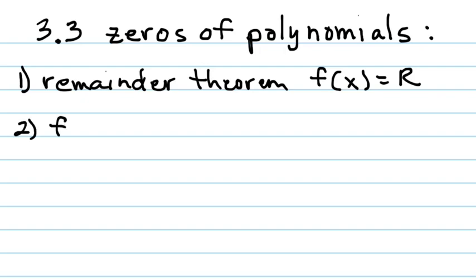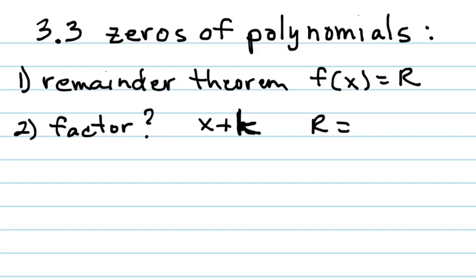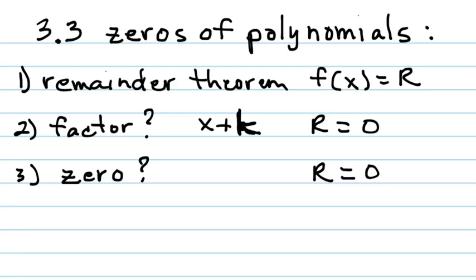Then, we were asked to see if a specific binomial is a factor. So x plus k is a factor only if the remainder equals zero. And the third one: they were asking whether a certain number is a zero of a polynomial. Again, that's only yes if the remainder equals zero; no if it doesn't.